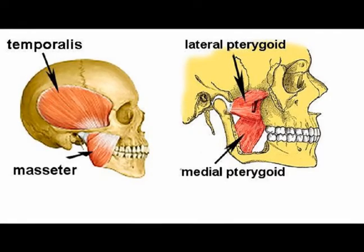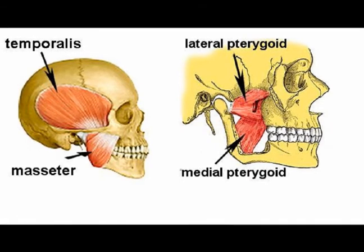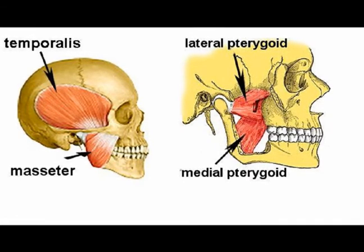The temporalis muscles are innervated by the mandibular branch of the trigeminal nerve, which is cranial nerve number five.